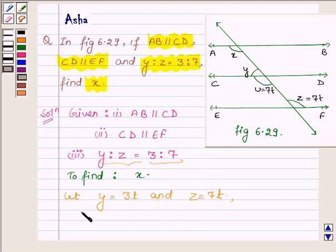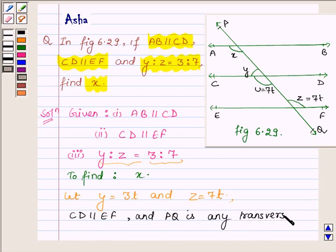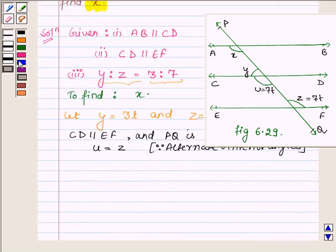CD is parallel to EF, and let this transversal be PQ. Since they are alternate interior angles, U equals 7T. Now PQ is a line.